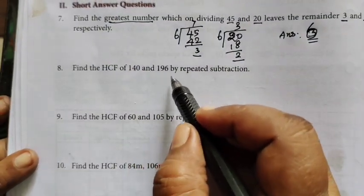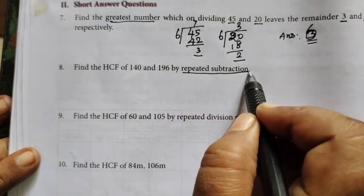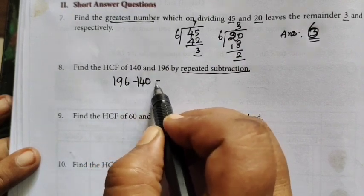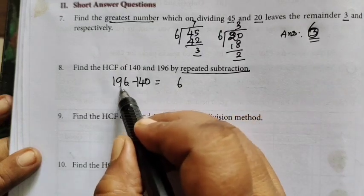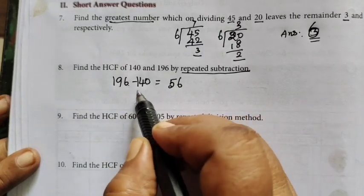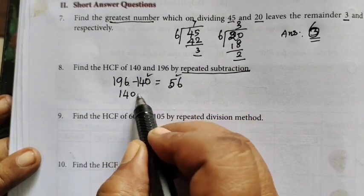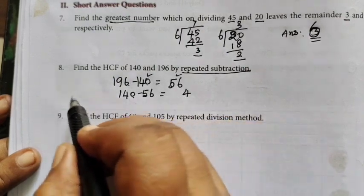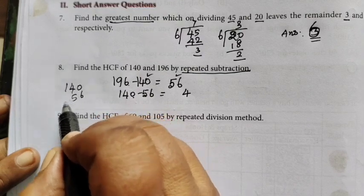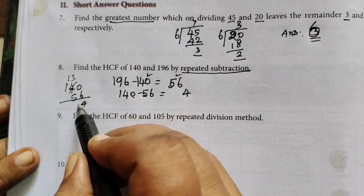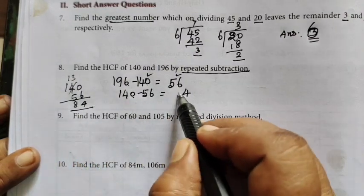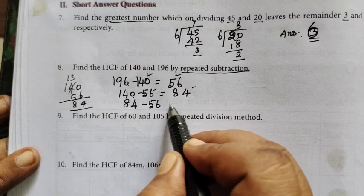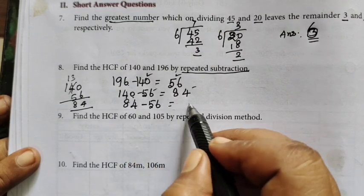Find the HCF of 140 and 196 by repeated subtraction. Repeated subtraction method is done. I will select 196 and 140 minus. So here is 6 minus 0 is 6, 9 minus 4 is 5. It is the difference between these two, 140 minus 56. So 10 minus 6 is 4. What the balance is? So 140, then 56, 4, this is 3, so 13, 13 minus 5 is 8, so 84. Next we choose this, 84 minus 56.